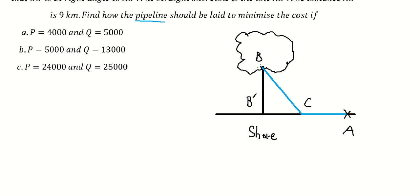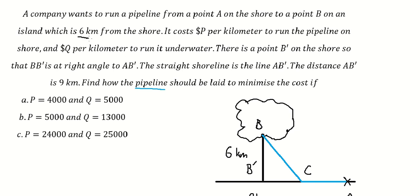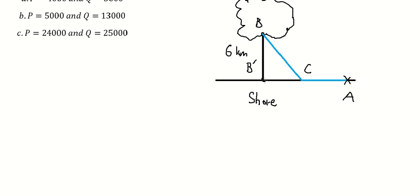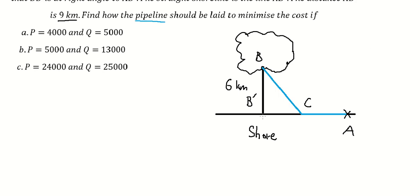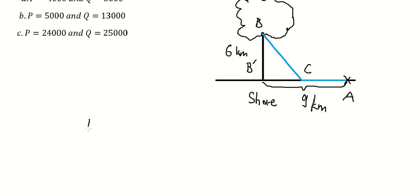BB-star equals 6. From A to this point, that is about 9. We set up the variable s, and we have a right angle here, so we can find BC using this setup.